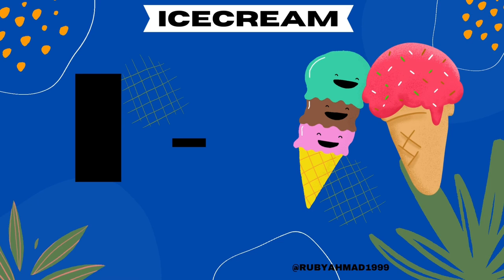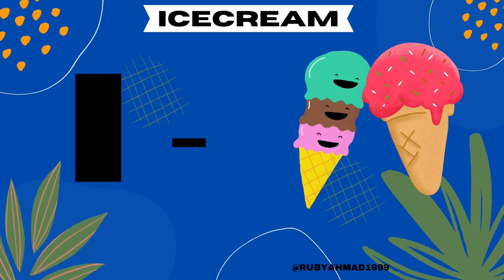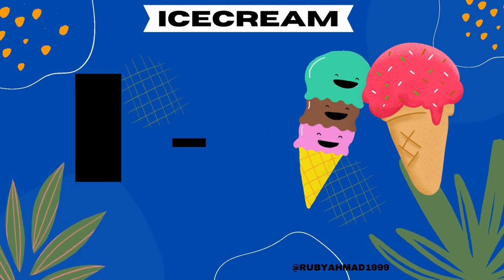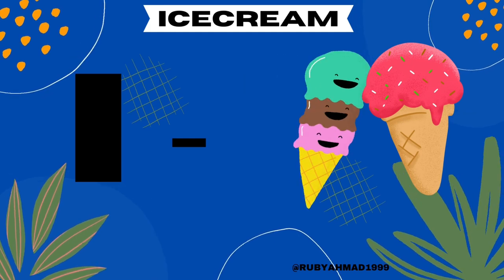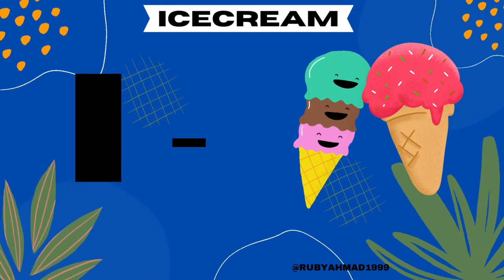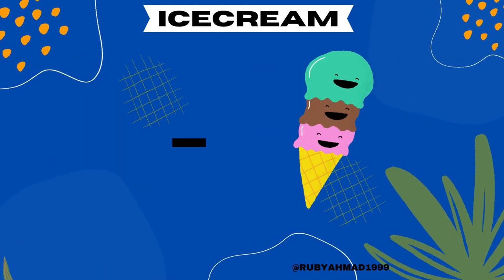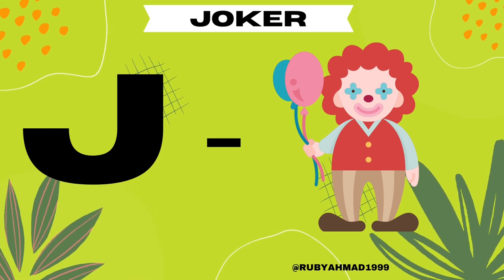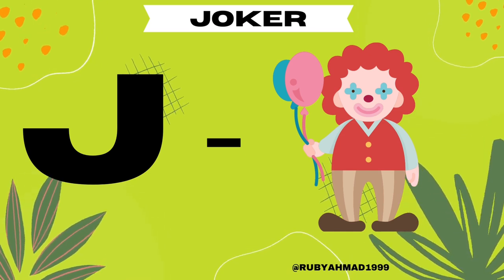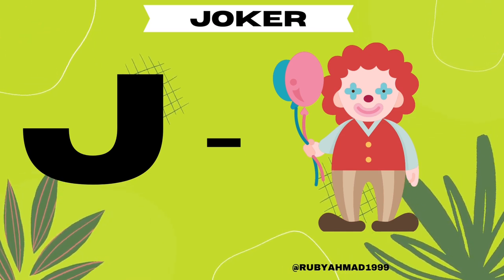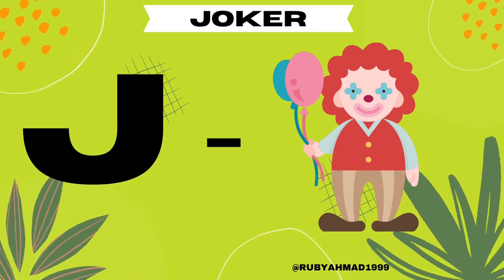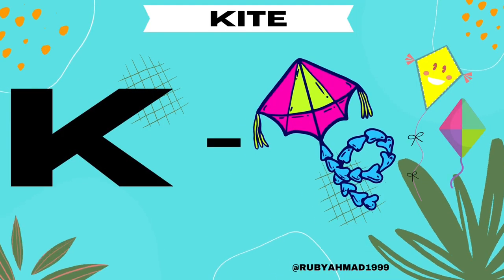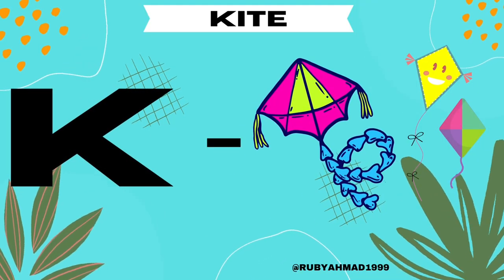I for ice cream. J for joker. K for kite.